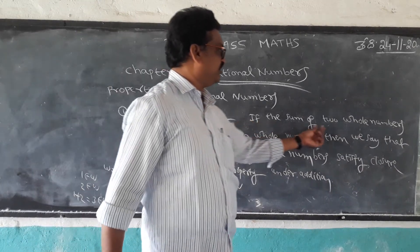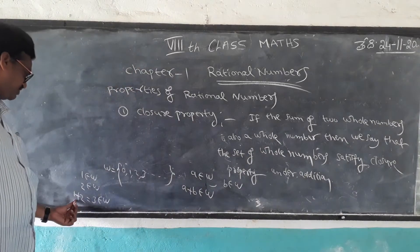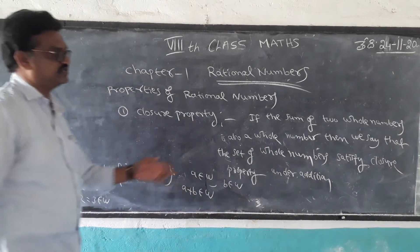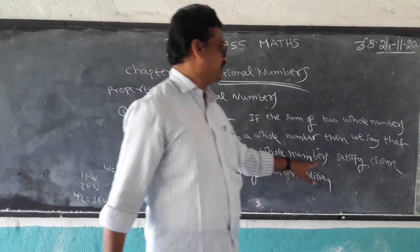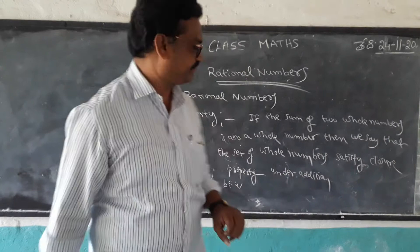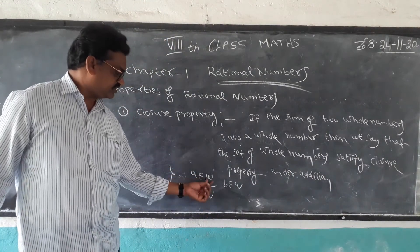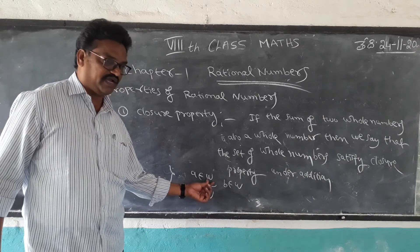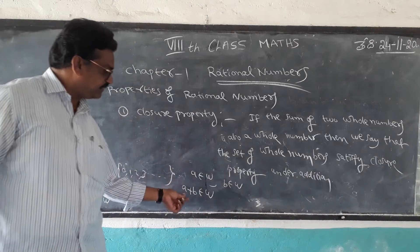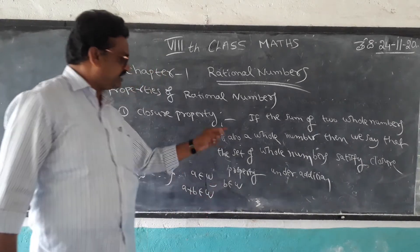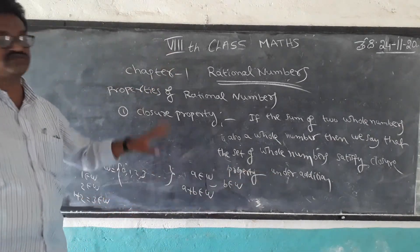Once again, the sum of two whole numbers — 1 plus 2 is 3, and 3 is also a whole number. Therefore, the sum of two whole numbers is also a whole number, and the set of whole numbers satisfies the Closure Property. Similarly, if you replace W with N: A belongs to N, B belongs to N, then A plus B belongs to N — that also satisfies the Closure Property under addition for natural numbers.